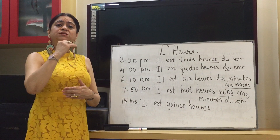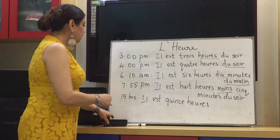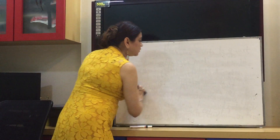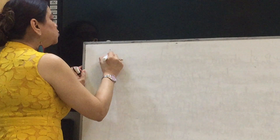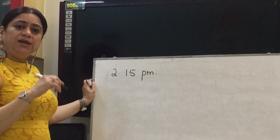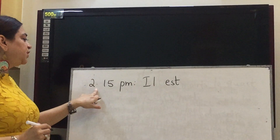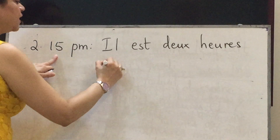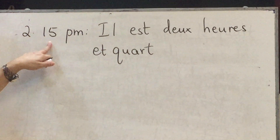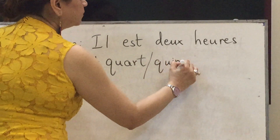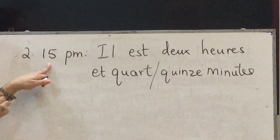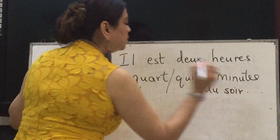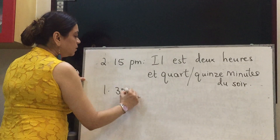Now we need to look at how every quarter is expressed. Say it is 2:15 P.M. — you start with 'il est' and then deux heures. For 15 minutes, you write 'et quart,' meaning a quarter. You can also write it as 'quinze minutes.' So two ways: 'et quart' or 'quinze minutes.' We have 'il est deux heures et quart du soir.'